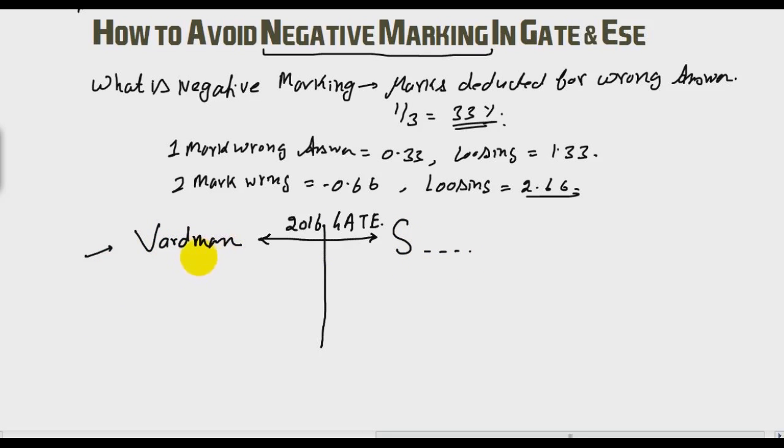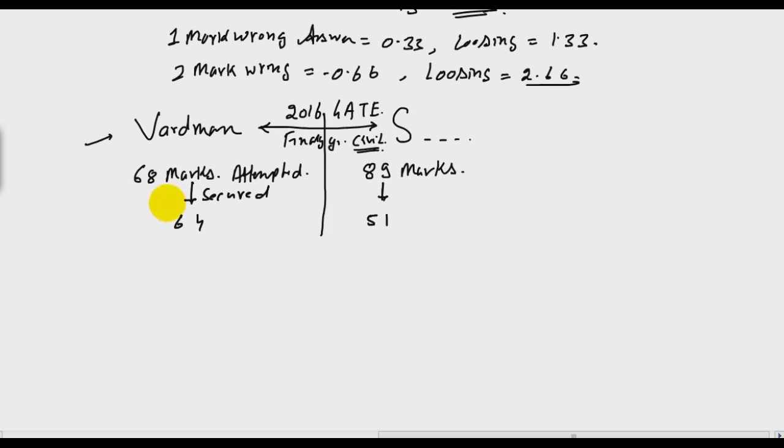Now what happened? Both have equal caliber, both are finally year students of civil. What happened? Vardaman attempted 68 marks in 2016 GATE and S attempted 89 marks.